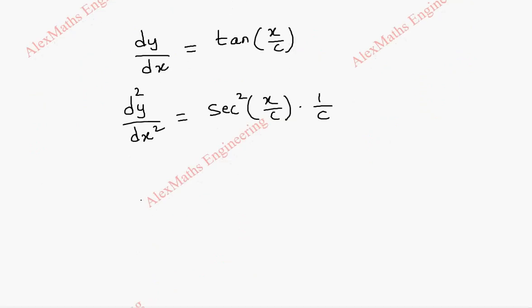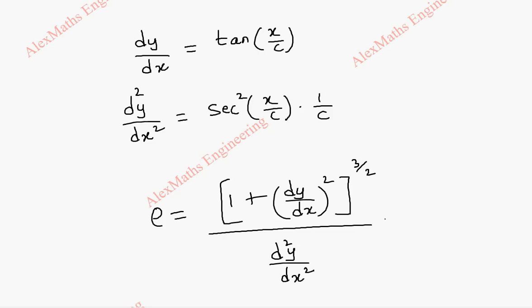Now the formula for radius of curvature ρ equals [1 + (dy/dx)²]^(3/2) divided by d²y/dx². So here it is 1 plus tan²(x/c),